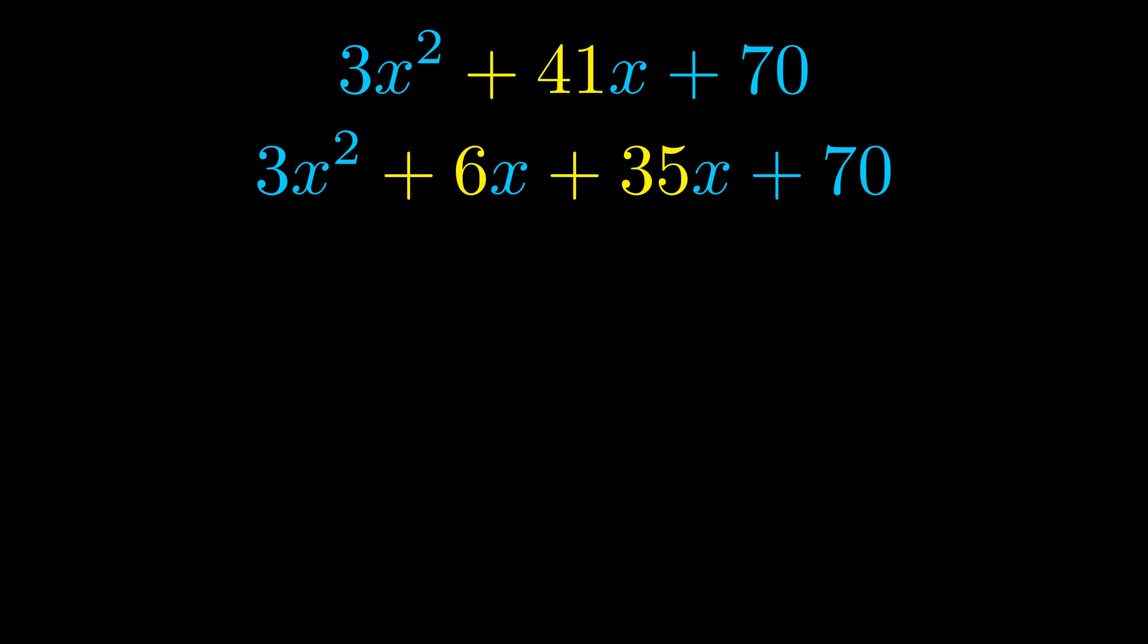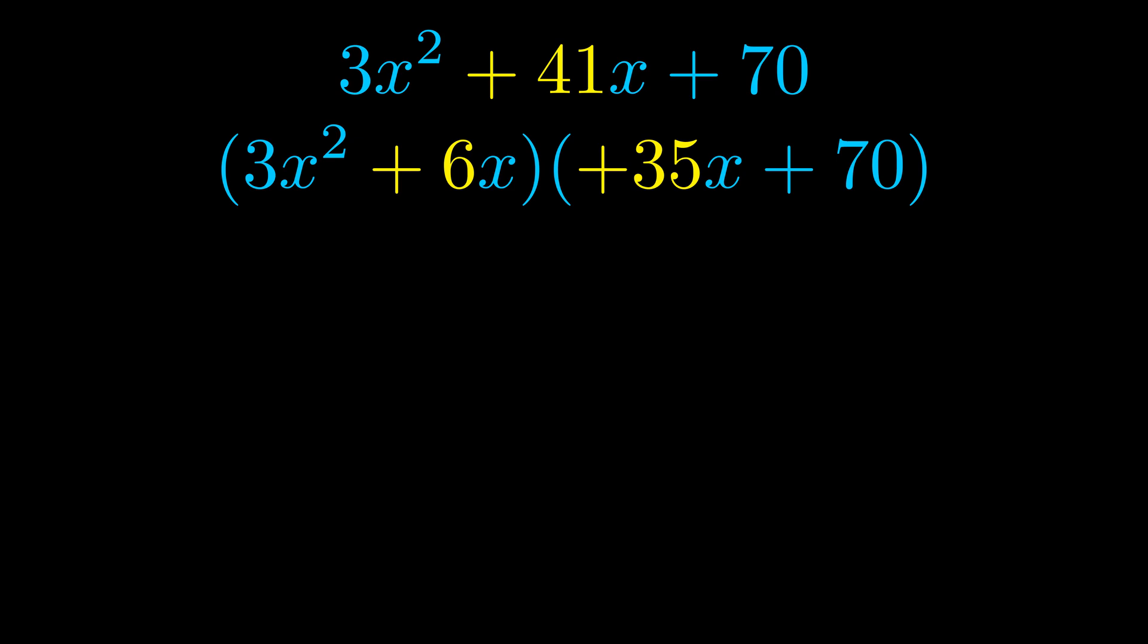Once we've done this we go ahead and we put parentheses around the first term and the last term and we do that so that we can take the greatest common factor out of both terms. We can see the greatest common factor is now outside in green.